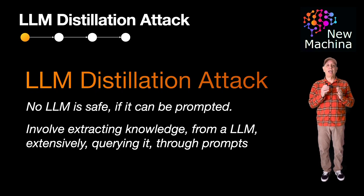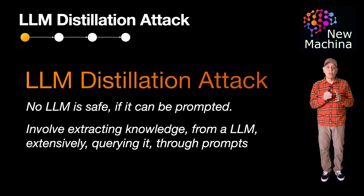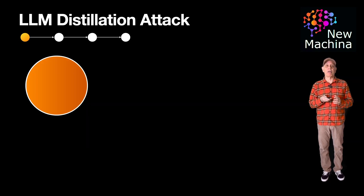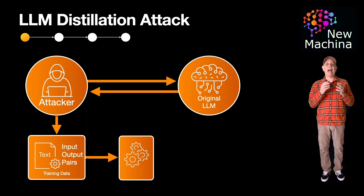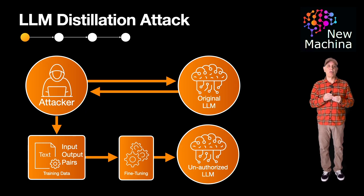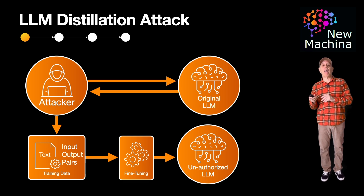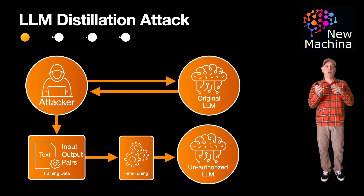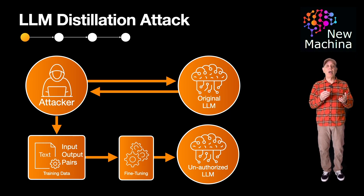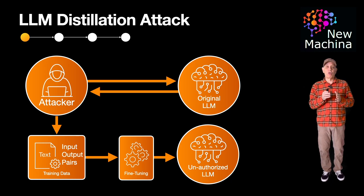In simple terms, LLM distillation attacks are like copying a model's brain by asking a lot of questions and using the answers to build a less capable but similar brain. These attacks work by sending numerous queries to an LLM and using both the input and output pairs as training data for another LLM. This process is a form of distillation where the attacker distills knowledge from the original model into a new unauthorized model.